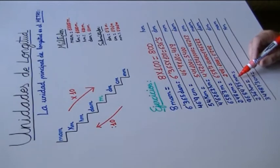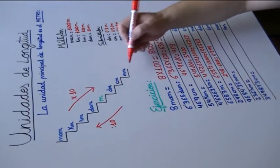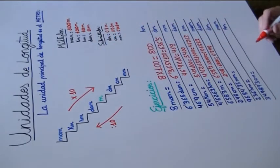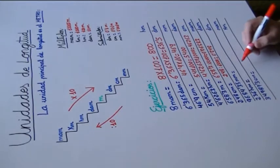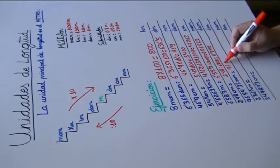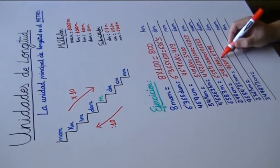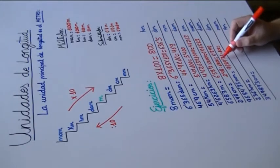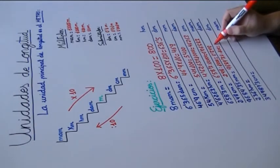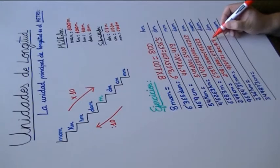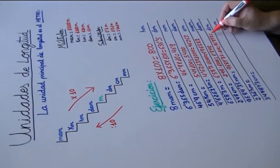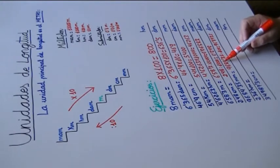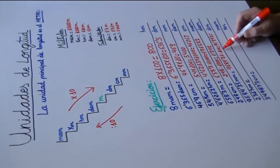9684,35 milímetros a decímetros. De milímetro a decímetro, ¿cuántos escalones tenemos que subir? 1 y 2. Dos escalones, dividimos entre 100. 9684,35 entre 100 es igual a 96,8435. He desplazado la coma hacia la izquierda dos cifras, porque son dos ceros los que acompañan al 1.